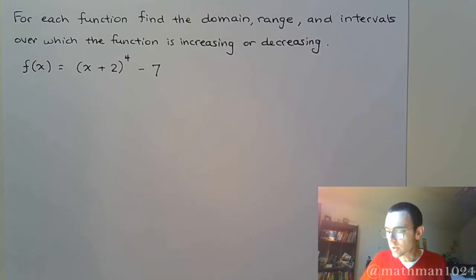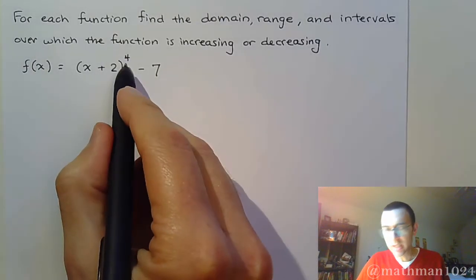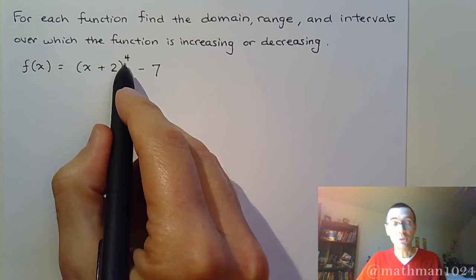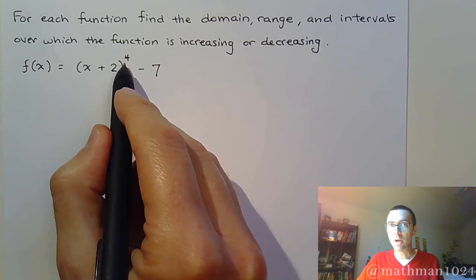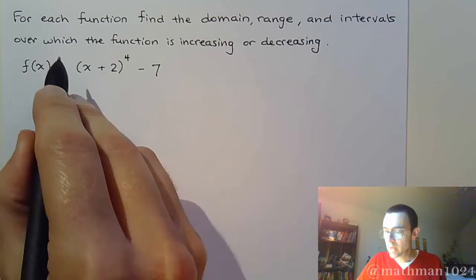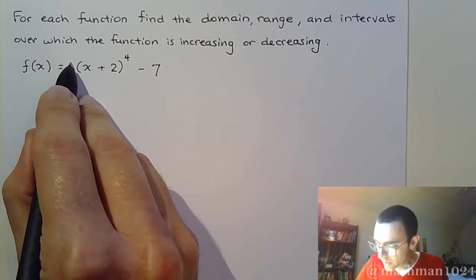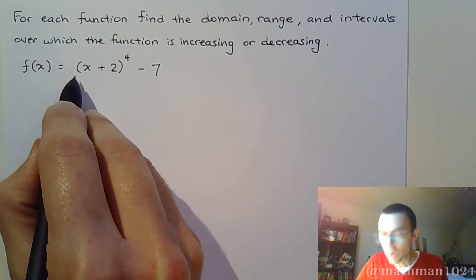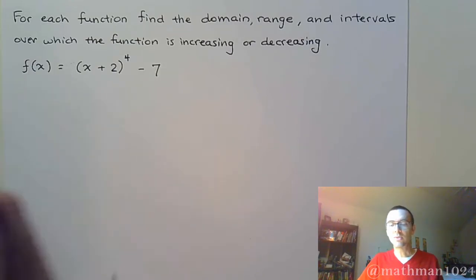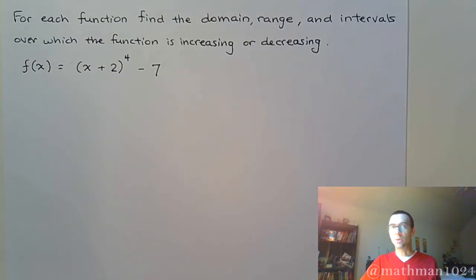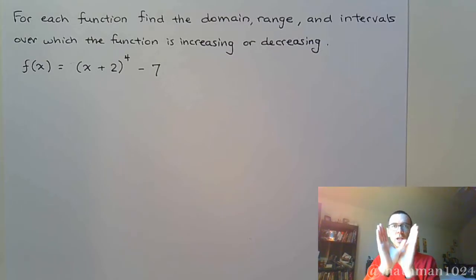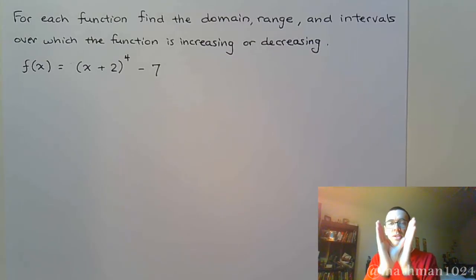First of all, we need to understand that this is a polynomial function of even degree. The lead coefficient here is a 1, which is positive, so we know from the last video — when we talked about end behavior — that if it's an even degree it's going to be like a parabola, and with a positive lead coefficient it's going to be opening up.